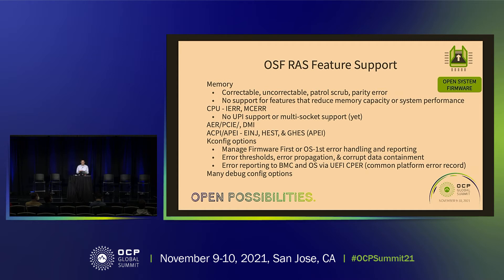In the kconfig — those are the coreboot kconfig options. We manage whether you want to do firmware first or OS first, and we set up the interrupt accordingly. You can also set up error threshold, error propagation, and how you report it through BMC or OS through the UFS SIPR format.